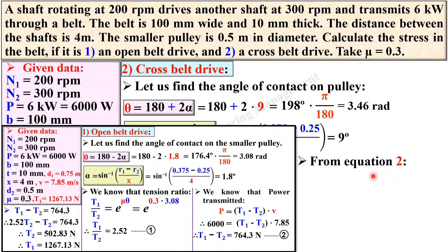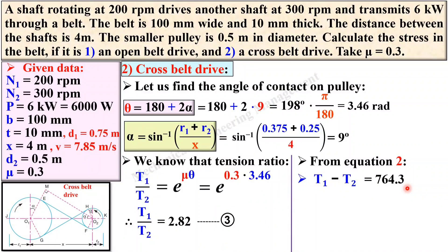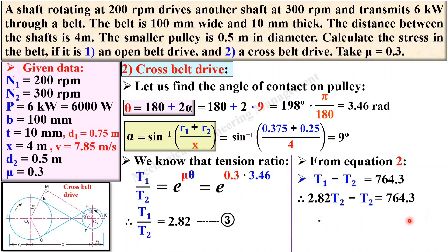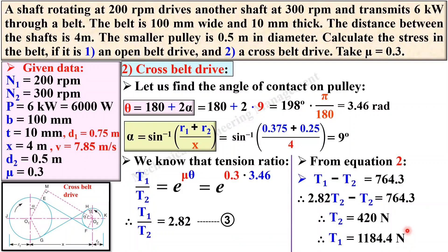Again, P = (t1 − t2) × v gives t1 − t2 = 764.3 N. From equation 3, t1 = 2.8·t2. Substituting and simplifying gives t2 = 420 N, and therefore t1 = 1184.4 N, which is the tight-side tension.